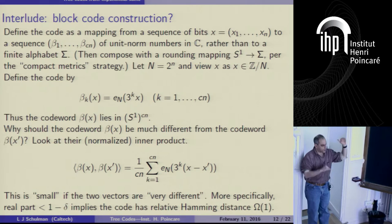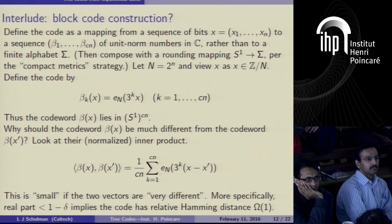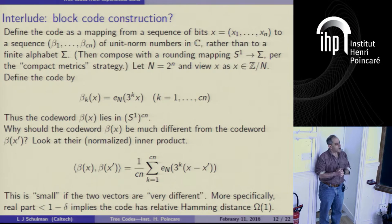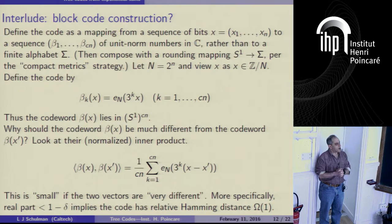This bound has since been improved many times — Bourgain-Garaev make the exponent one-quarter, and subsequent improvements bring it to some positive number. So if you have a geometric series of polynomial length in capital N, you can get the kind of thing we'll end up needing. But we're going to need much shorter geometric series.